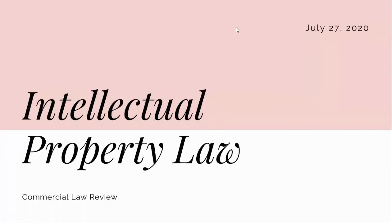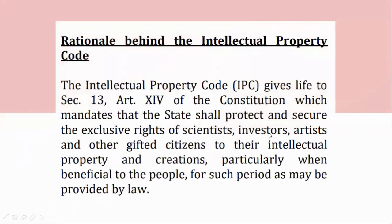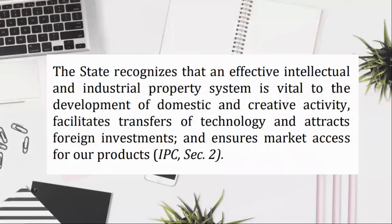Intellectual Property Rights and the General Rationale Behind the Intellectual Property Code. The Intellectual Property Code gives life to Section 13, Article 14 of the Constitution, which mandates that the state shall protect and secure the exclusive rights of scientists, inventors, artists, and other gifted citizens to their intellectual property and creations, particularly when beneficial to the people, for such period as may be provided by law. The state recognizes that an effective intellectual and industrial property system is vital to the development of domestic and creative activity, facilitates transfers of technology and attracts foreign investments, and ensures market access for our products. IPC, Section 2.